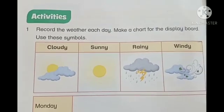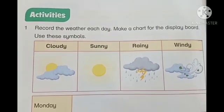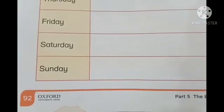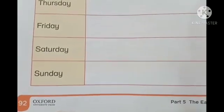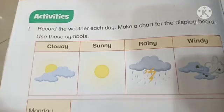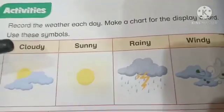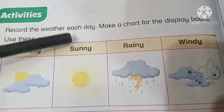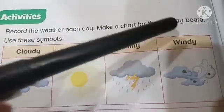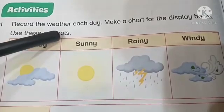Assalamu alaikum my little kids, today we are going to do activities on page number 92. Our first activity is to record the weather each day, make a chart for the display board using these symbols.